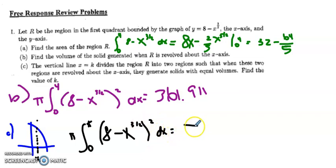And that is going to equal pi times k to the 4 of 8 minus x to the 3 halves, all squared dx.